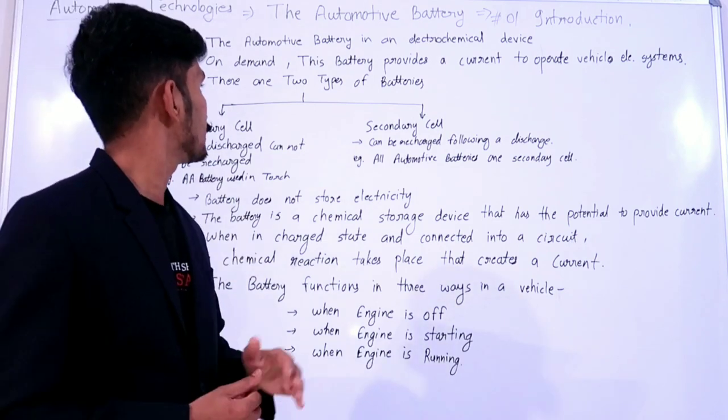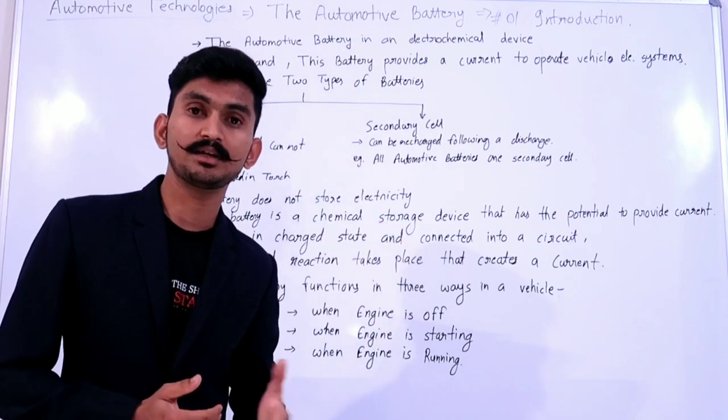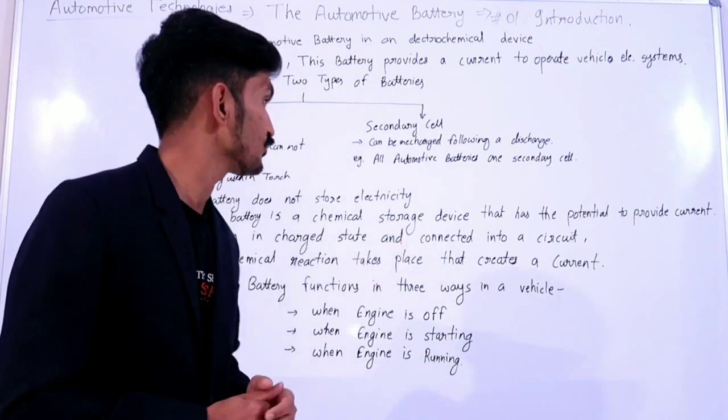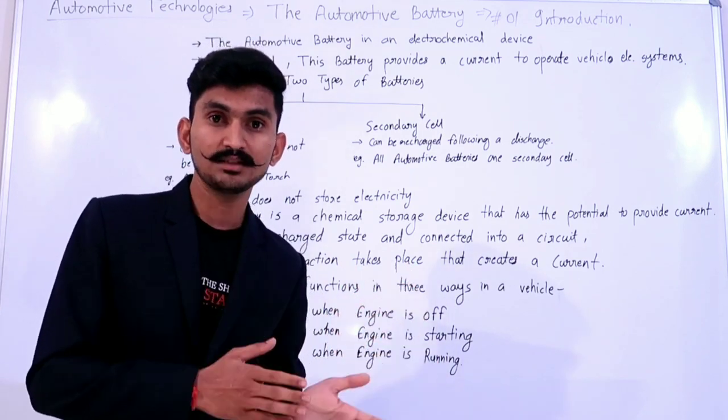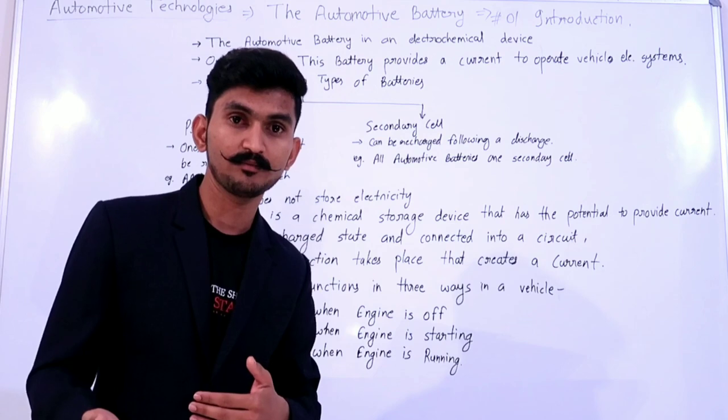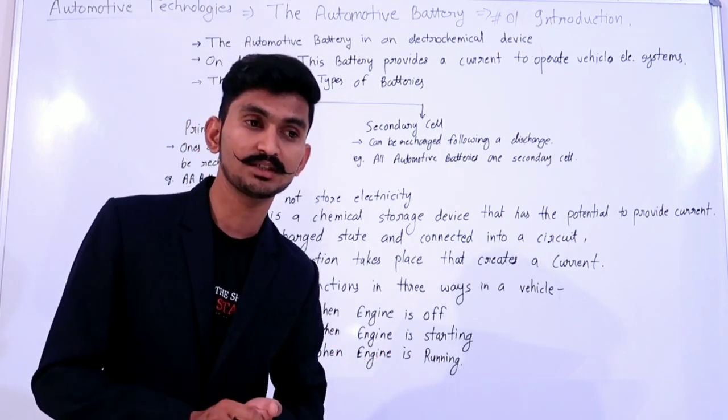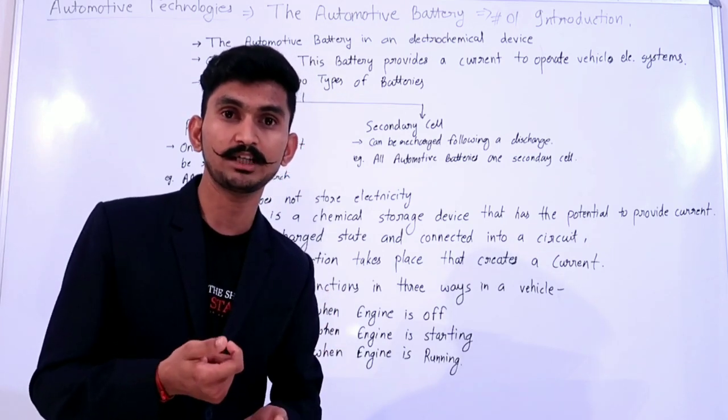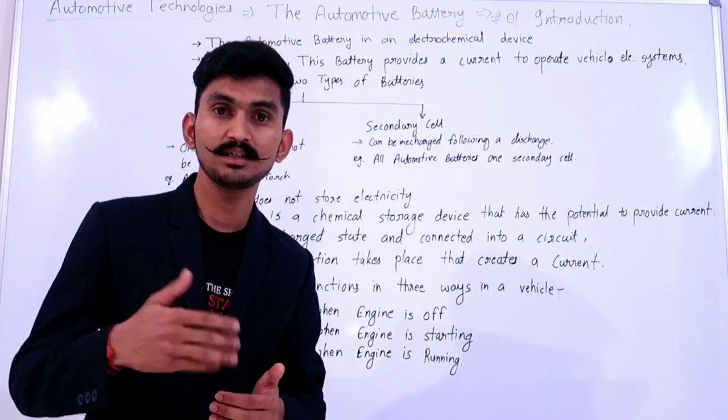Third point: there are two types of batteries - primary cell batteries and secondary cell batteries. Primary cell batteries are ones that, when discharged, cannot be charged. For example, AA batteries which are used in torches - after discharge, they cannot be charged.